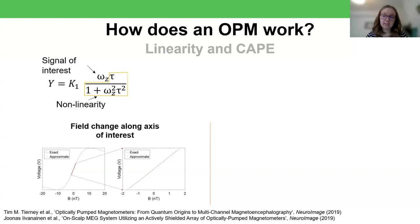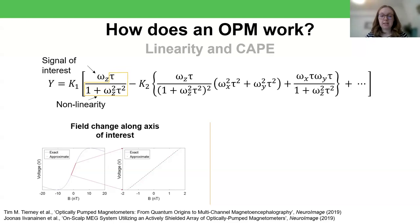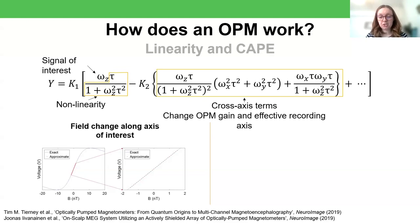Often people will stop there, but technically the OPM signal equation is an infinite series. And this is the next term. This is responsible for what you might hear called cross-axis projection errors, or CAPE. And so here, if omega z is the magnetic field along the z-axis of the sensor, and that's what we're interested in, omega x and omega y are the magnetic fields on the axes perpendicular to that. So if, using my right hand, if z is the z-axis, I'm looking at the magnetic field going this way, what I'm actually seeing is that what I'm recording is also dependent on the magnetic field going, well, perpendicular to it, going along x and going along y.